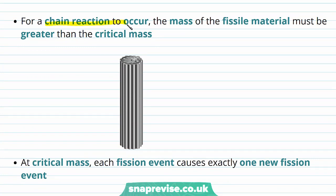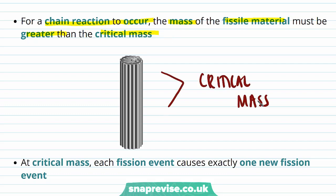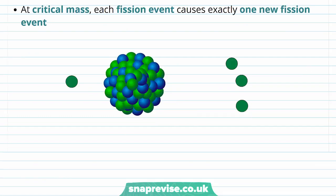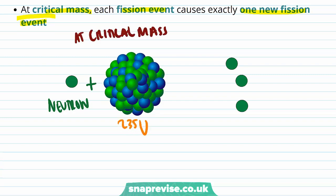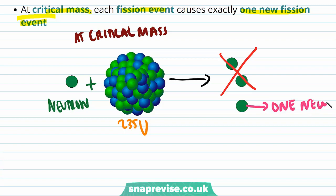In order for a chain reaction to occur, the mass of the fissile material must be greater than the critical mass. At critical mass, each fission event causes exactly one new fission event. So the first fission event at critical mass will produce three neutrons, two of which will not cause fission, but one of which will go on to cause one new fission event.